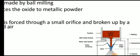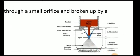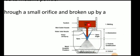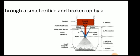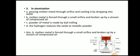Here you can see the schematic of atomization. This is the molten metal; it is poured through a small orifice. And then a stream of compressed air or a water jet is sprayed, impinged so as to get a fine particle or powder. That process is known as atomization.